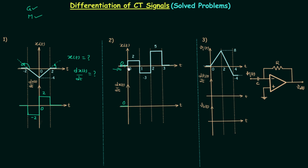When t is equal to zero there is a discontinuity equal to two, because we are switching from zero to two. We already know that discontinuity is equal to the weight or strength of the impulse. So we will have an impulse when t is equal to zero. The reason is that at t = 0 we have a perpendicular line, which has a slope equal to infinity, and in terms of signals this corresponds to an impulse signal. The strength of the impulse is equal to the discontinuity, so we write two here.